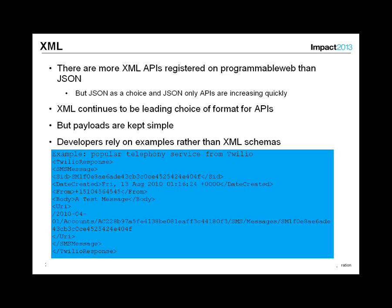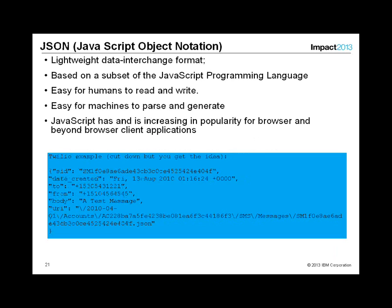XML has been a very popular information exchange format. Interestingly, the majority of APIs available today still expose information in XML. A simple example from Twilio — a telephony API that anyone can use — illustrates what an SMS message looks like in XML. Developers rely on examples; as shown on the Expedia Affiliate Network developer program, they're not looking at XML schemas — they want examples they can quickly use and get up and running with.